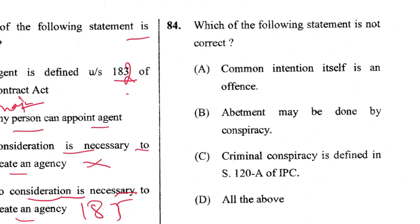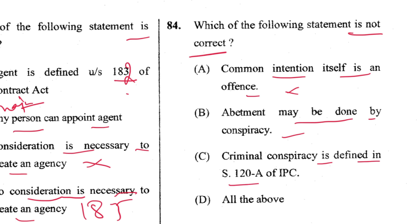Question 84: Which statement is not correct? Common intention itself is not an offence — this is not correct. Abatement may be done by conspiracy — yes. Criminal conspiracy is defined in Section 120B — correct. So A is not correct. A is the answer.